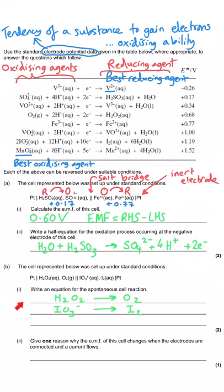Using the same approach as the previous question: for the first half equation, the oxygen atoms are already balanced, so add two hydrogen ions to the right-hand side. That increases the right-hand side's charge to plus two, so add two electrons to the right-hand side. For the second half equation, first balance the iodine. Now there are six oxygen atoms on the left, so add six H₂O on the right. That gives 12 hydrogen on the right, so add 12 hydrogen ions on the left. The left-hand side is now a total charge of plus 10 once those 12 H⁺ ions cancel the two negatives, so add 10 electrons to the left-hand side. Now we have both half equations balanced.